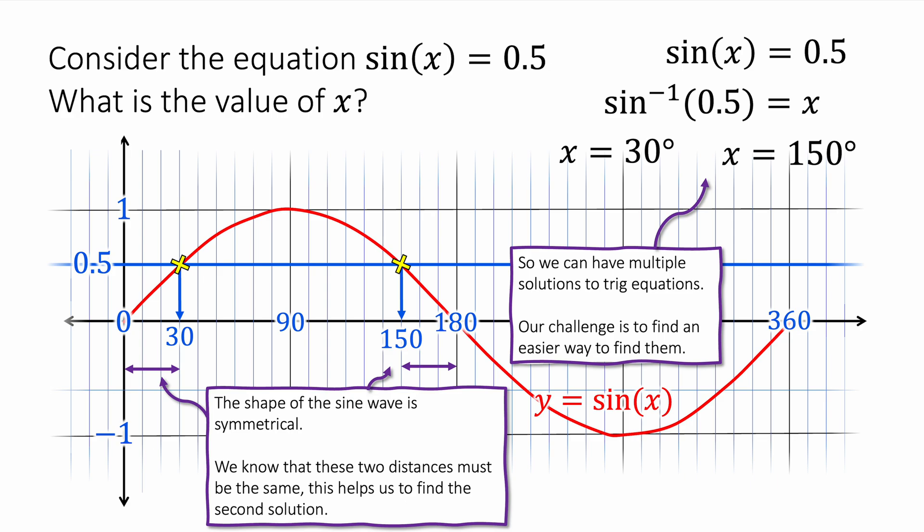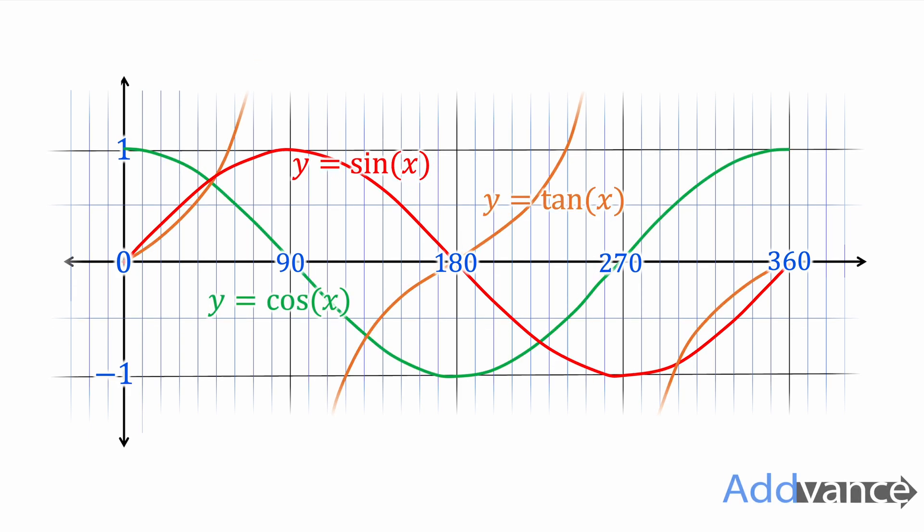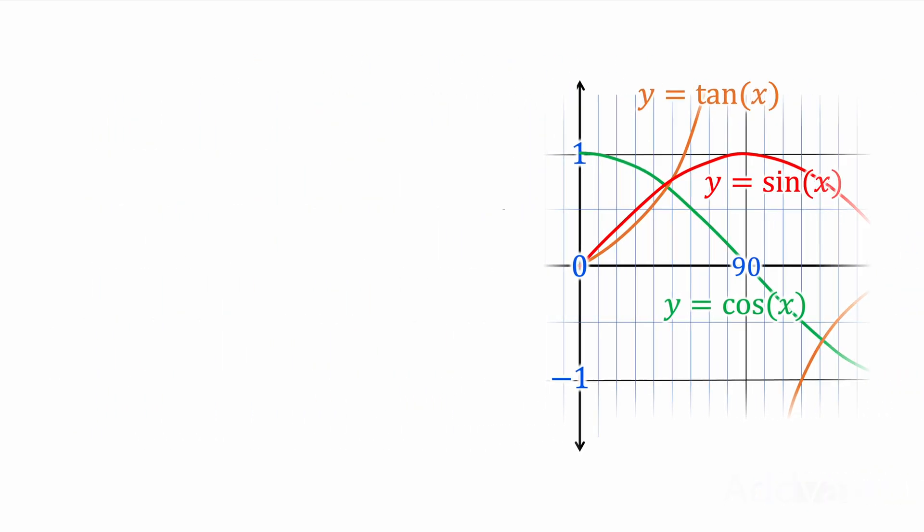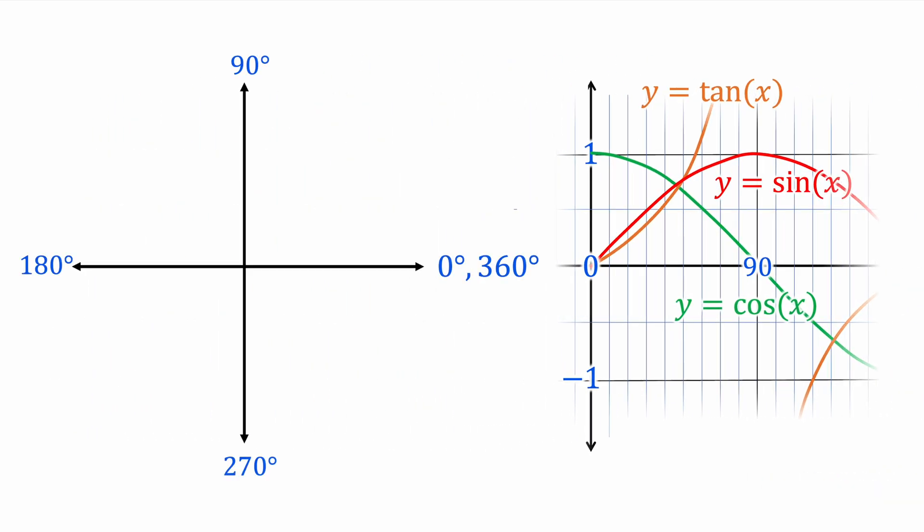We have our sin graph, cos, and tan graph there, and we also have this diagram on the left. These are four quadrants representing the angles 0 to 90, 90 to 180, 180 to 270, and 270 to 360. This is just representing the angles, and we draw it like this.